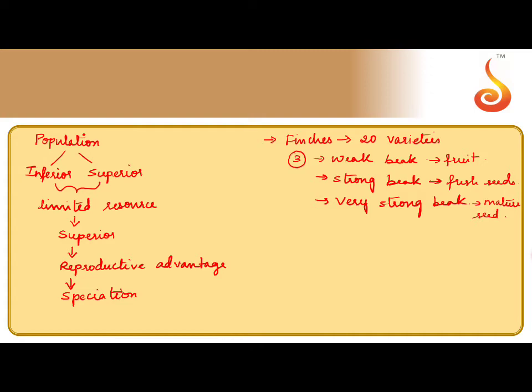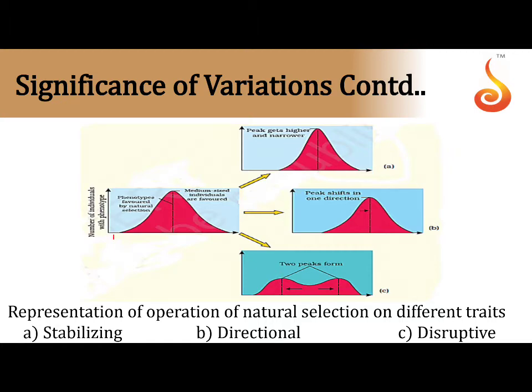If we want to plot a graph and look at this picture, say we have weak beak types at one point on x axis, strong beak at this point, and very strong beak at this point. When we are understanding that these are in a balanced form, I do not require very weak types or very strong type, and I am having the in between median form or the mean value as the most stabilized form, then we call that kind of natural selection as a stabilizing type.